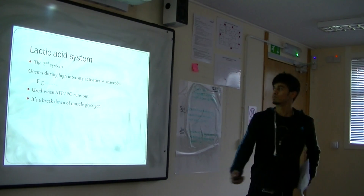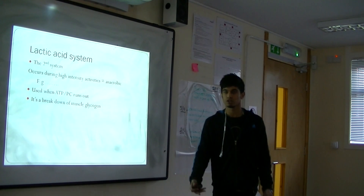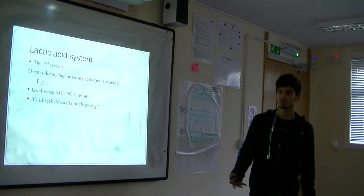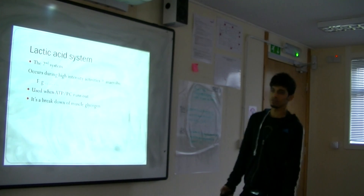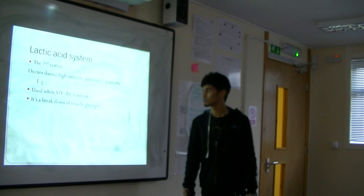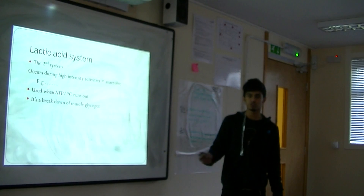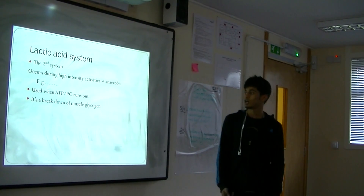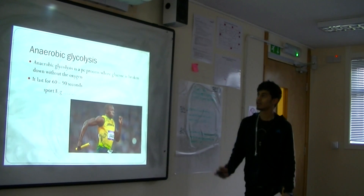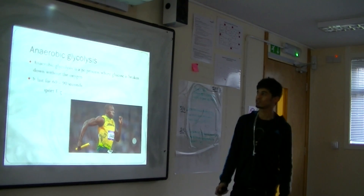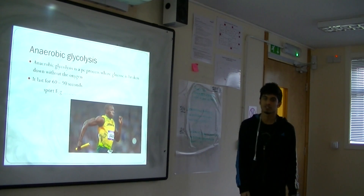The lactic acid system is the secondary energy system. It happens in short-distance anaerobic events such as the 200 metres sprint or the 4x100 metre relay. This only kicks in when the ATP and PC runs out and the body begins to break down glucose. Anaerobic lactic acid is a process where glucose is broken down without oxygen. This lasts for approximately 60 to 90 seconds.